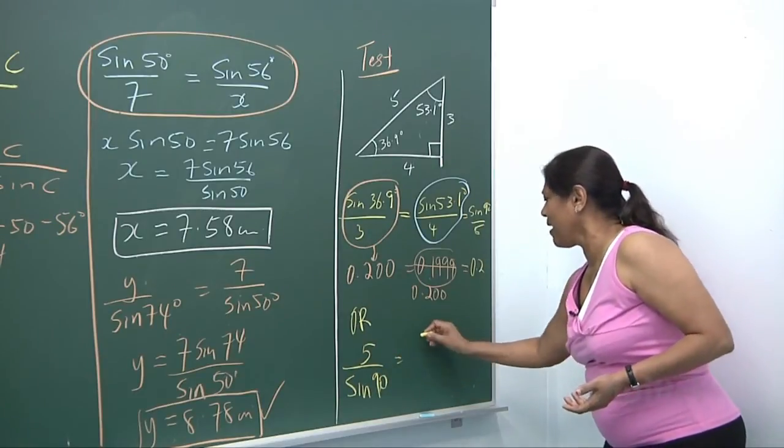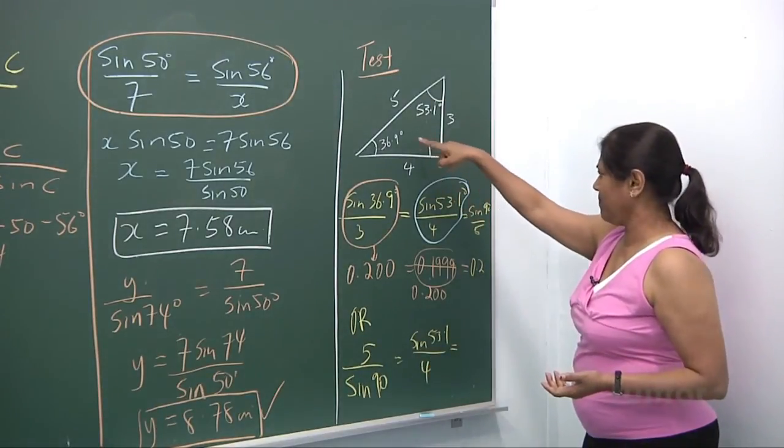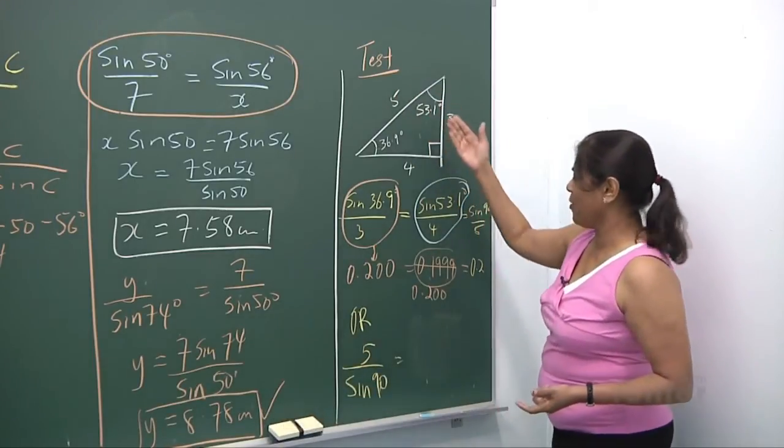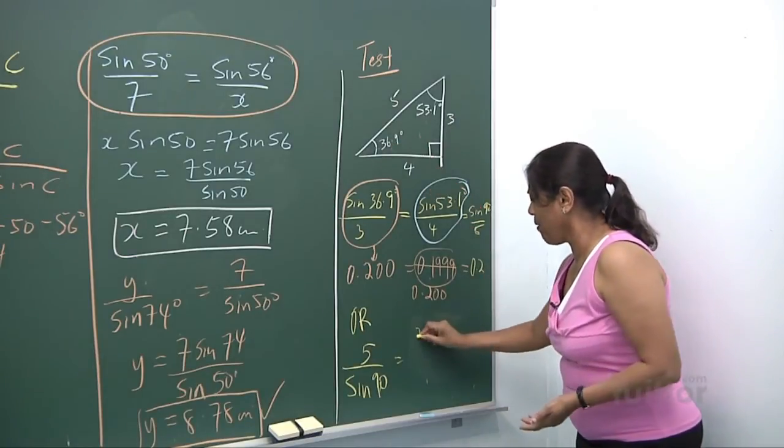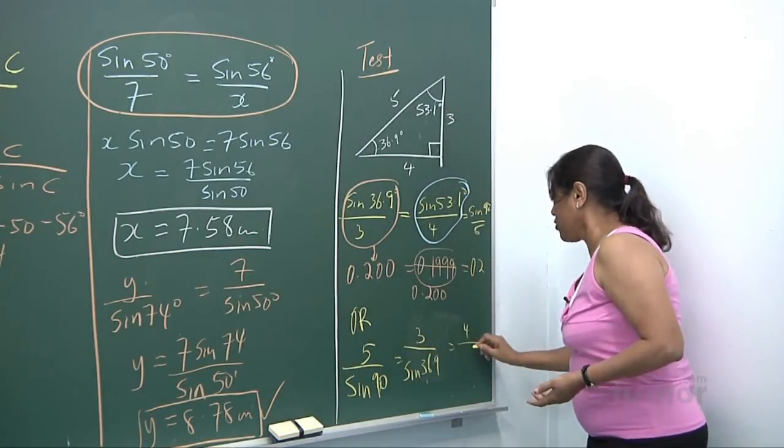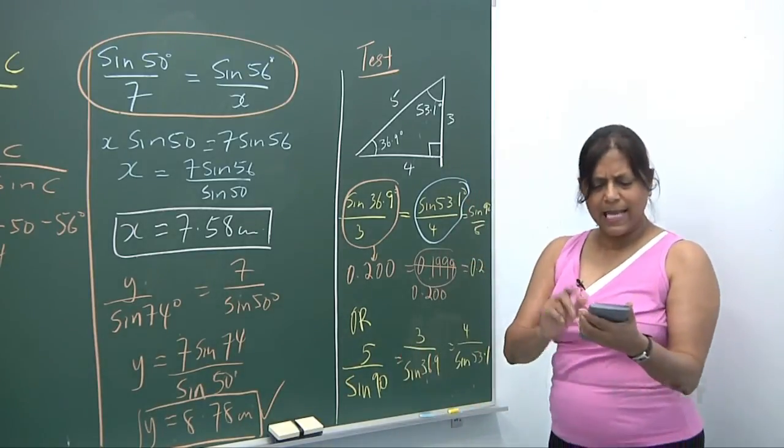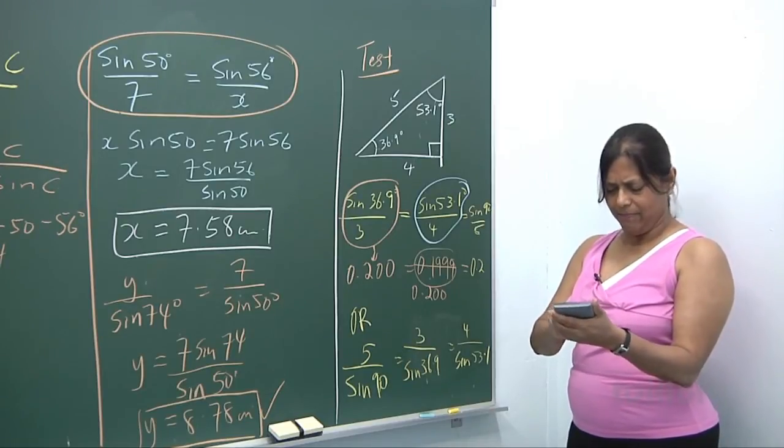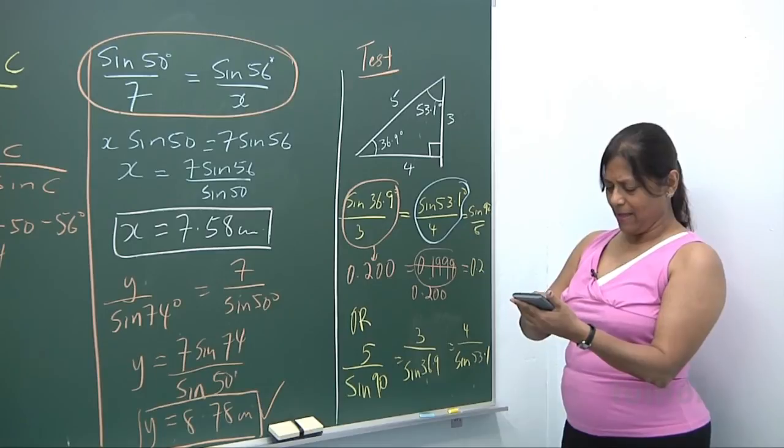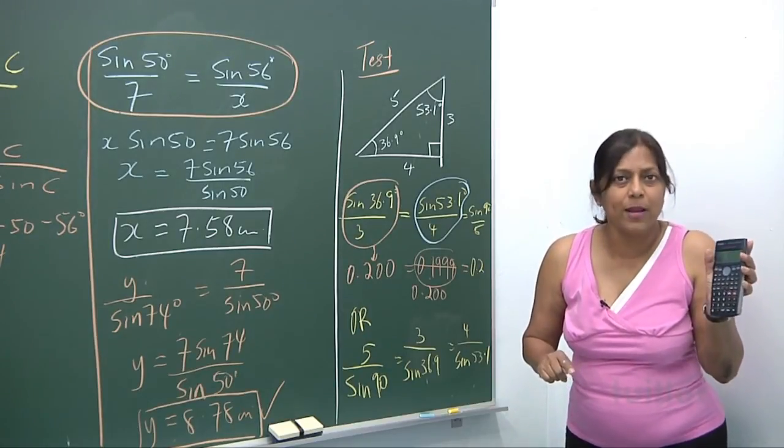I can set sin 53.1 over 4 - sorry, it's supposed to be side over the angle. I set 5 over sin 90, 3 over sin 36.9, and I can say 4 over sin 53.1. Can you help me work it out? Do you get 5 for each one of them? Just test and experiment. 5 divided by sin 90, you get 5. Do you see? You put 3 divided by sin 36.9. Do you get 5? I get 4.996, it's about 5. And when you get 4 divided by sin 53.1, I get 5.001. It's all there.